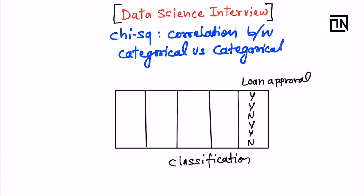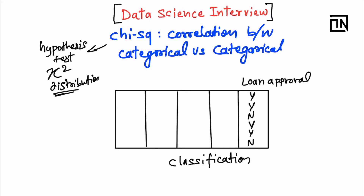Chi-square test is also a hypothesis test which uses the chi-square distribution to check the probability values. In this test, we compute a test statistic known as chi-square. It is based on cross-tabulation and it will be more effective to visualize if we discuss it with a context.